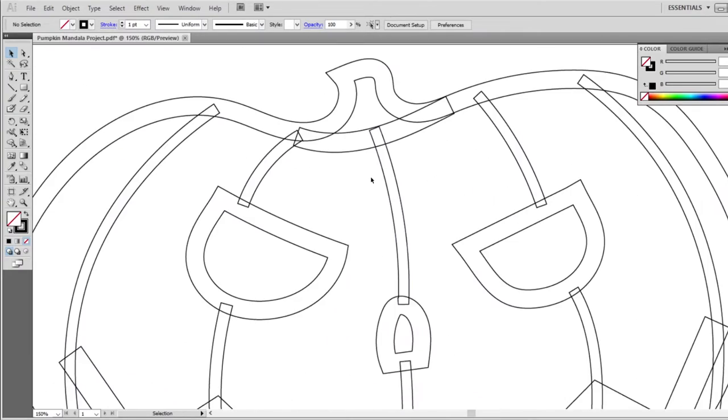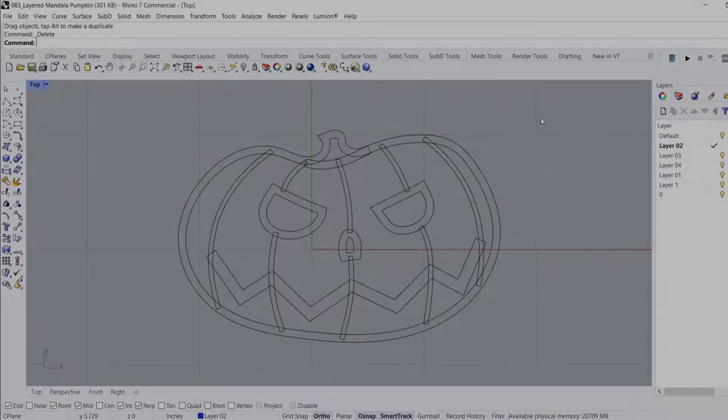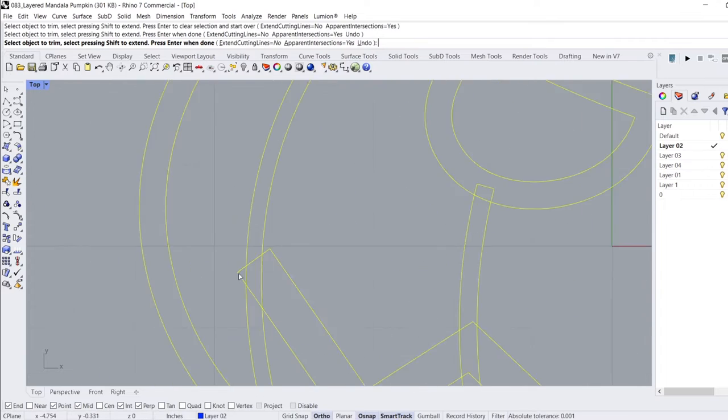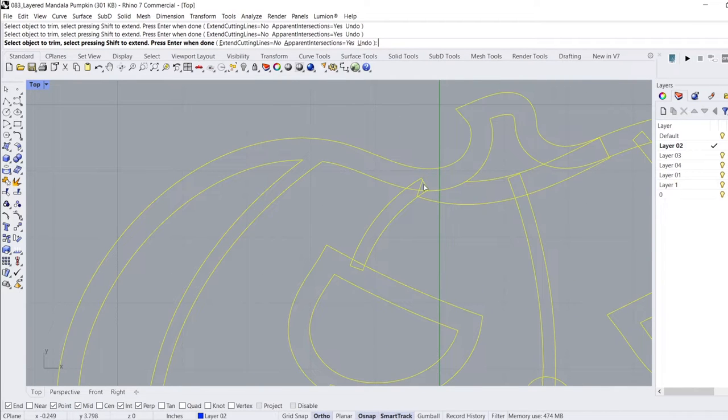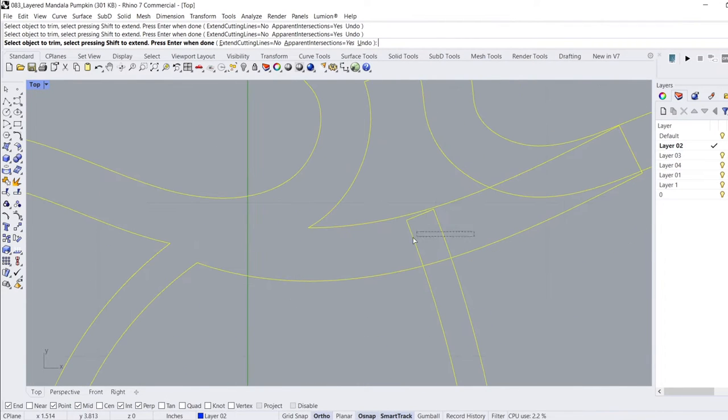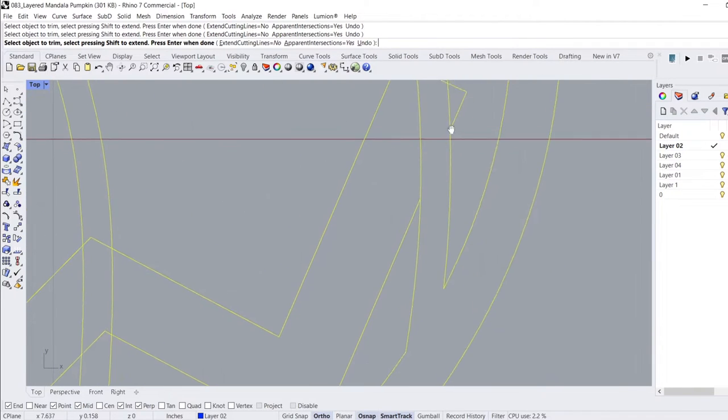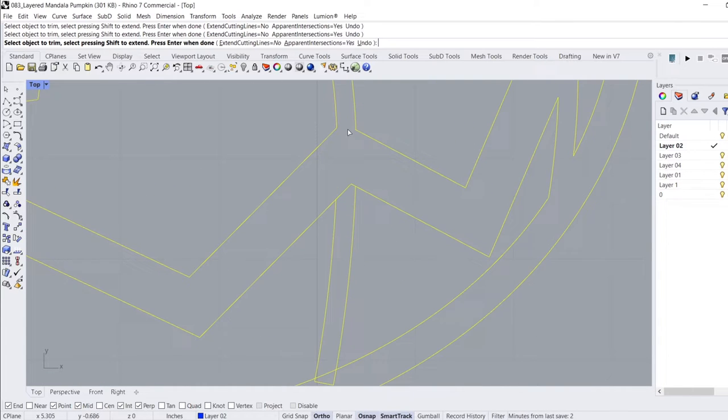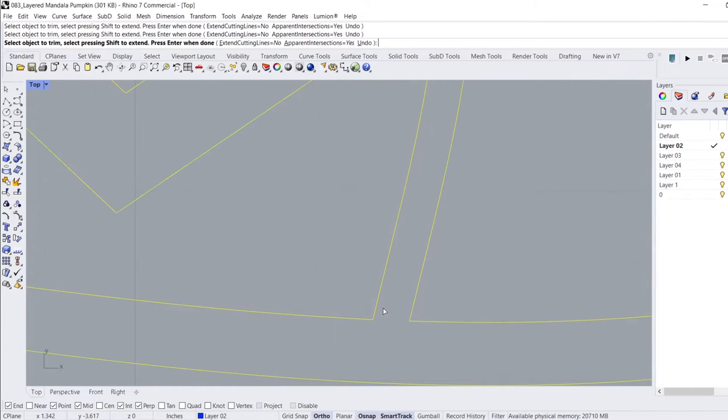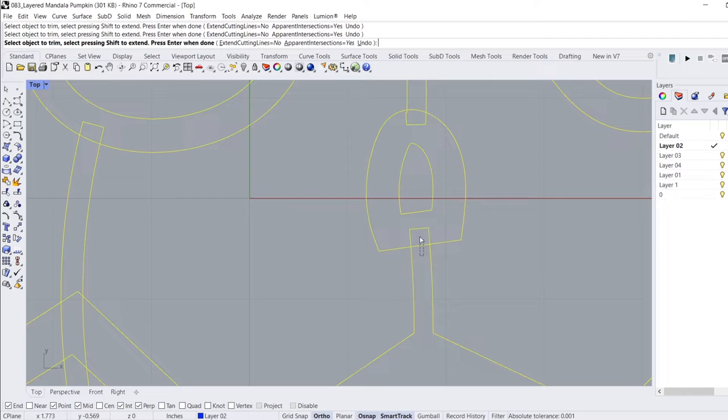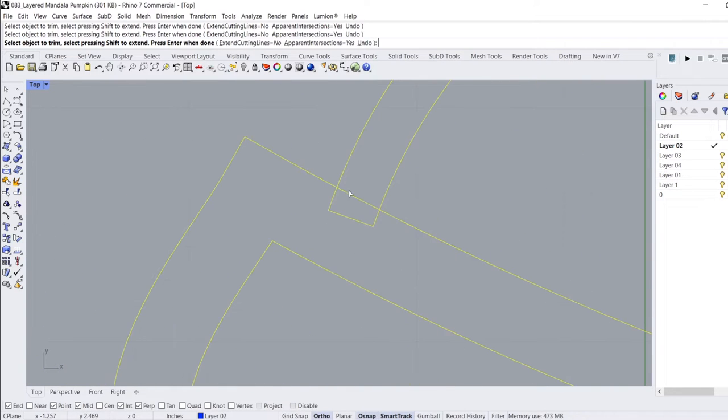My preference is to do all of this in Rhinoceros. After importing the jack-o-lantern drawing from Illustrator into Rhino, I select all of the lines, use the trim command, and click on all the lines that I want to remove. The goal here is to have a silhouette so that we can see the layered mandala through the jack-o-lantern. All pieces of the jack-o-lantern should be connected so that the cutout is in one single piece.